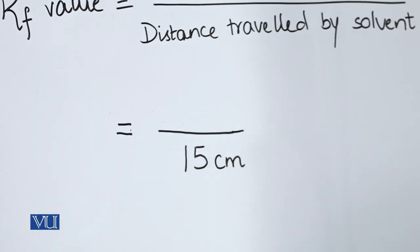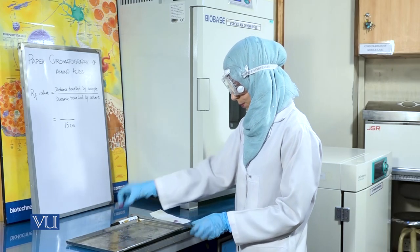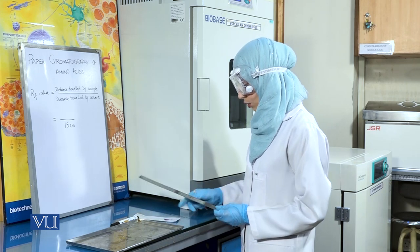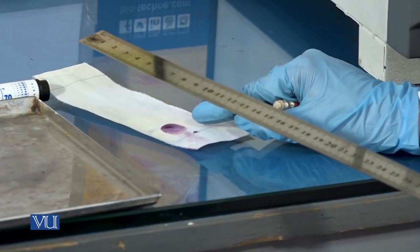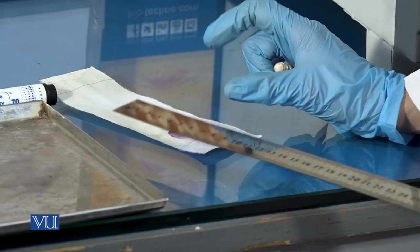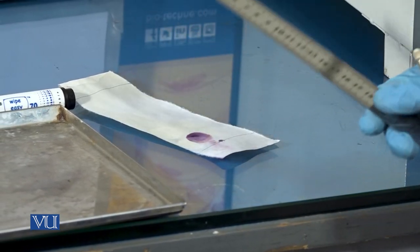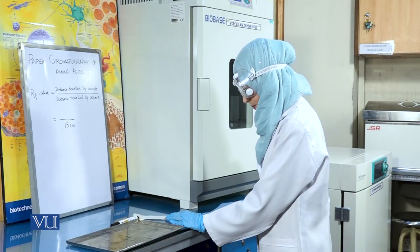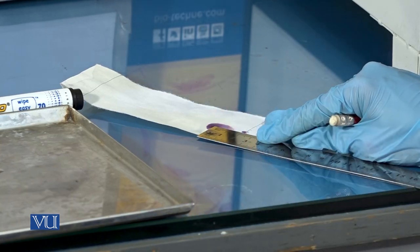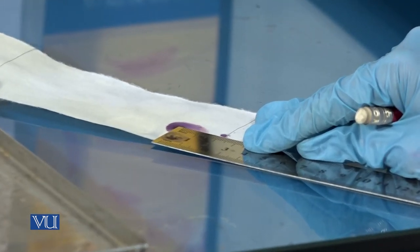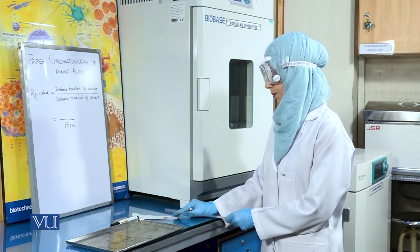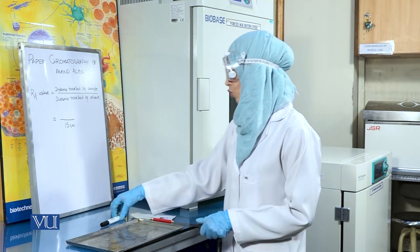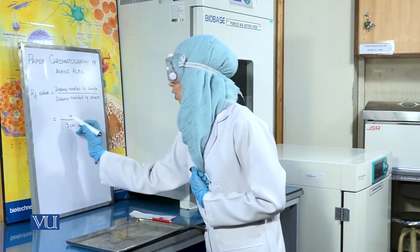This comes out to be 15 cm for our sample. We will then calculate the distance travelled by the spot or sample on the filter paper. We will measure the distance from the center of the spot. This comes out to be 2.1 cm for our sample.